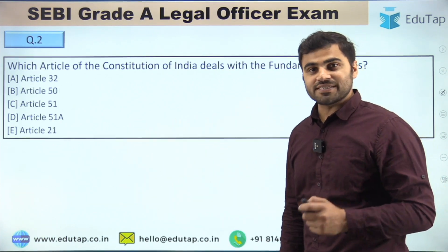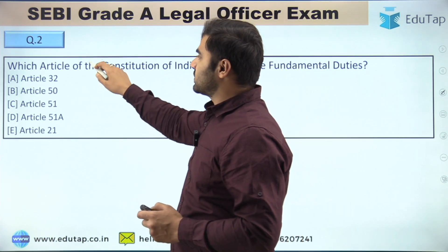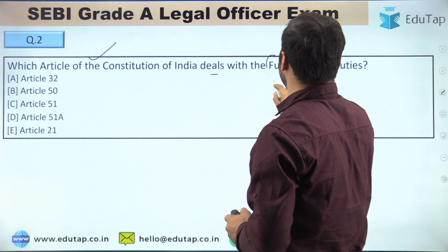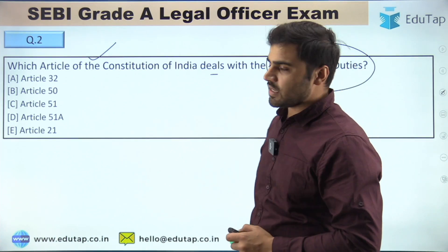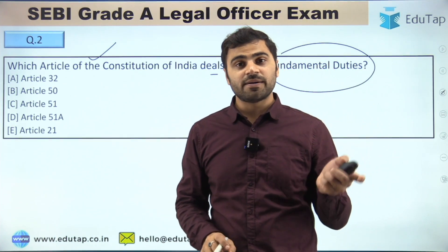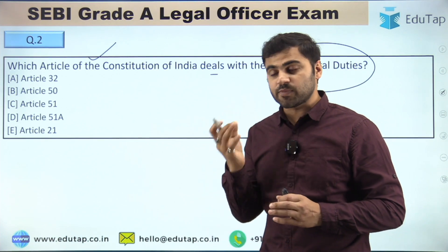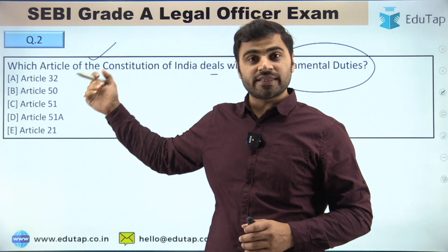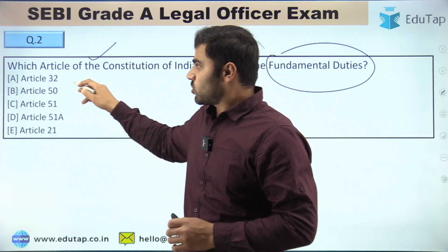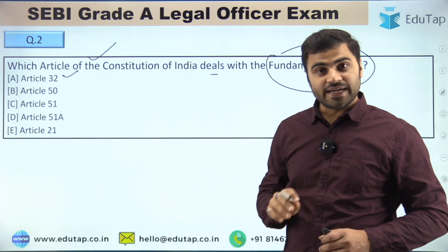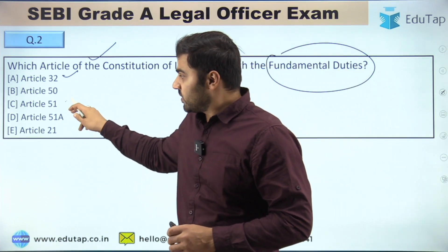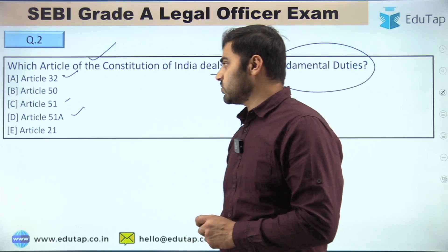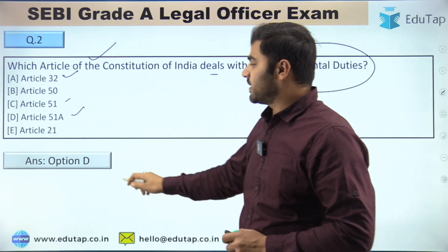Question number 2: Which article of the constitution of India deals with fundamental duties? This is a very basic question but sometimes asked in examinations, and even experienced candidates generally make a mistake. To avoid that mistake, we are covering it here. Options are: Article 32, Article 50, Article 51, Article 51A, or Article 21.